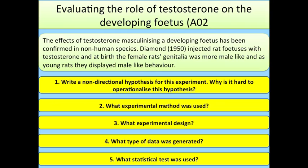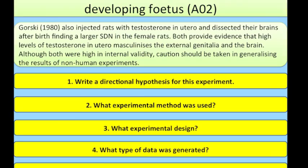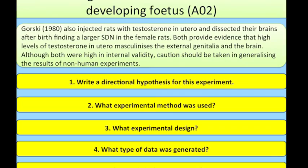The effects of testosterone masculinising a developing fetus have been confirmed in non-human species. Diamond (1950) injected rat fetuses with testosterone and, at birth, the female rats' genitalia was more male-like, and as young rats they displayed more male-like behaviour. Gorski (1980) also injected rats with testosterone in utero and dissected their brains after birth, finding a larger SDN in the female rats.